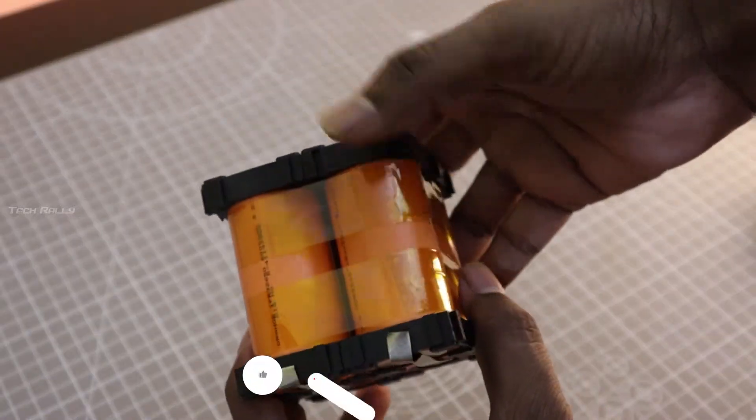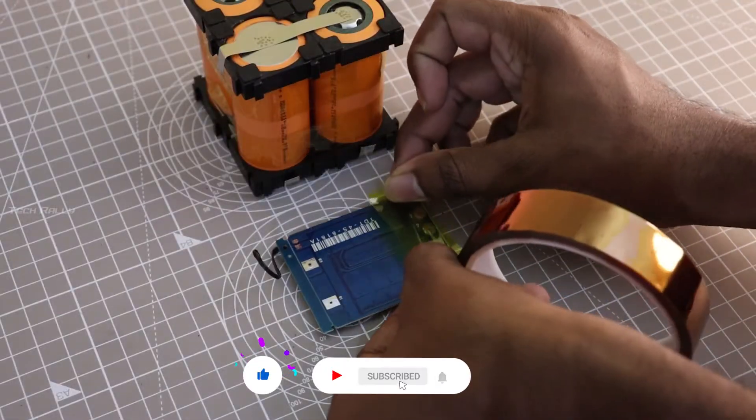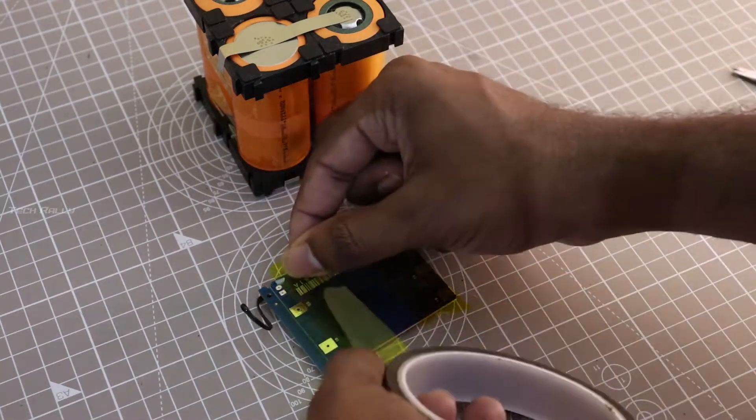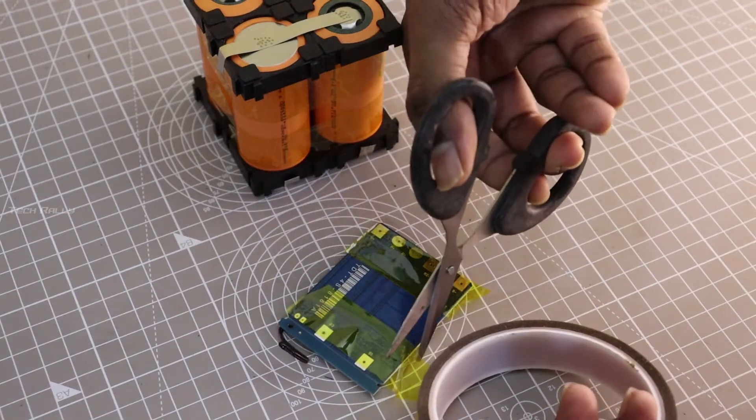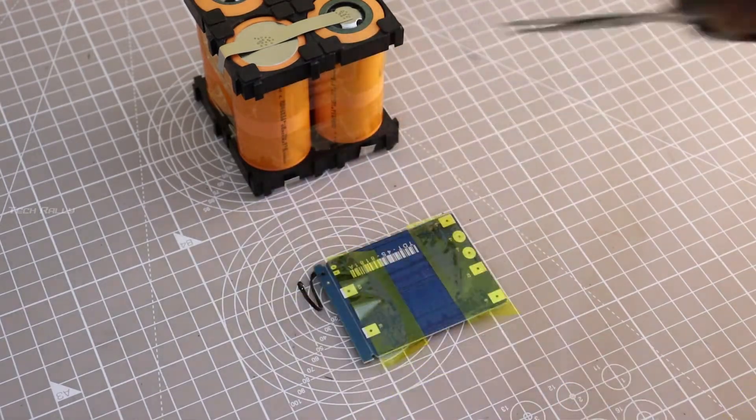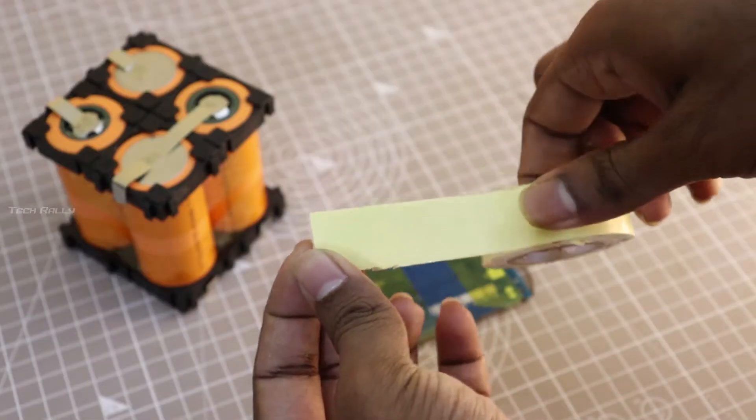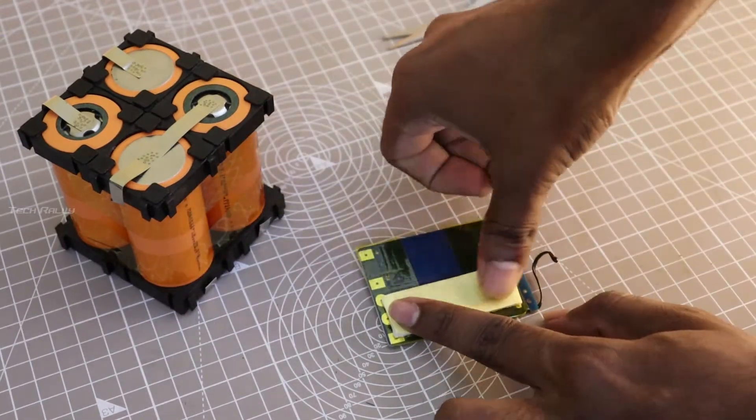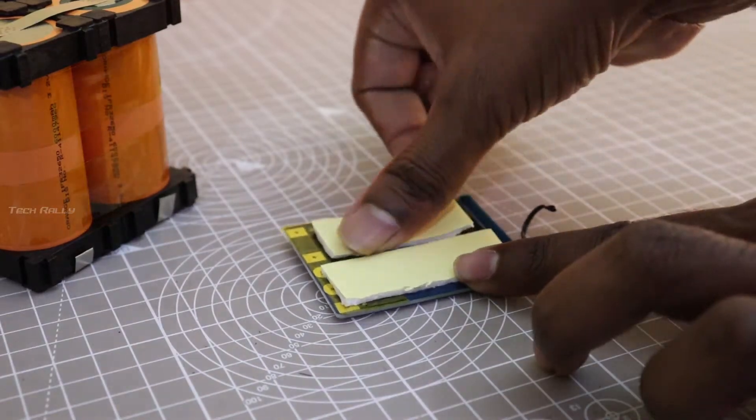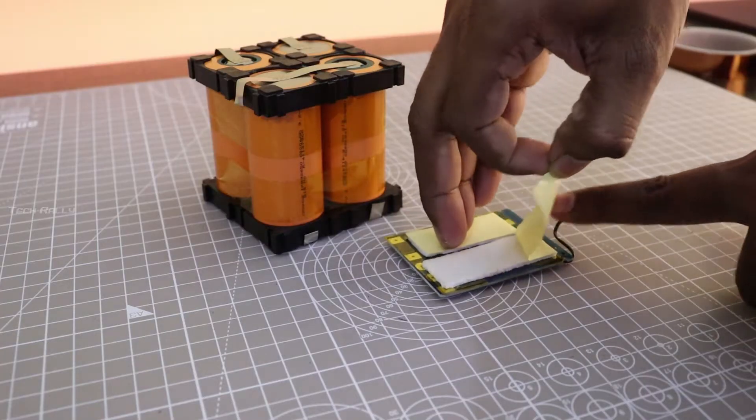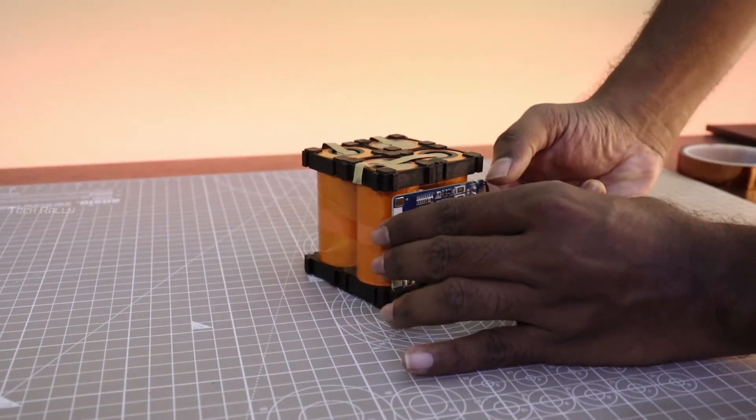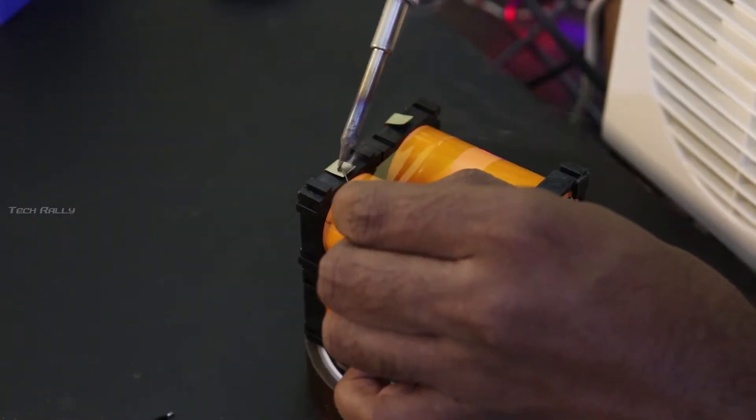I use the Kapton tape to stick the batteries together and use the double-sided tape to hold the BMS. Then I soldered the BMS connections.